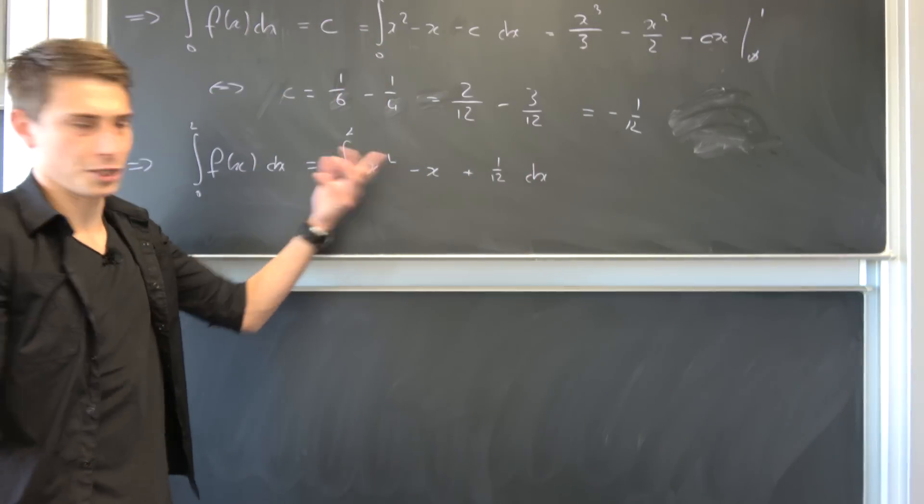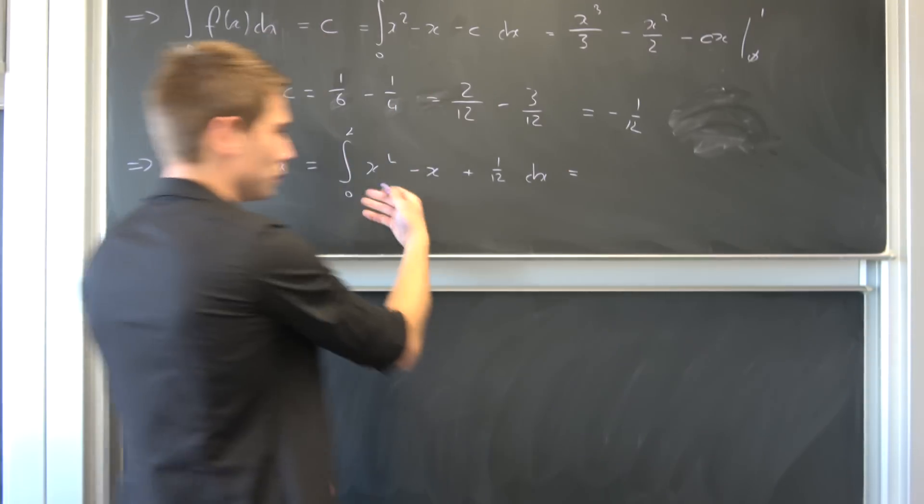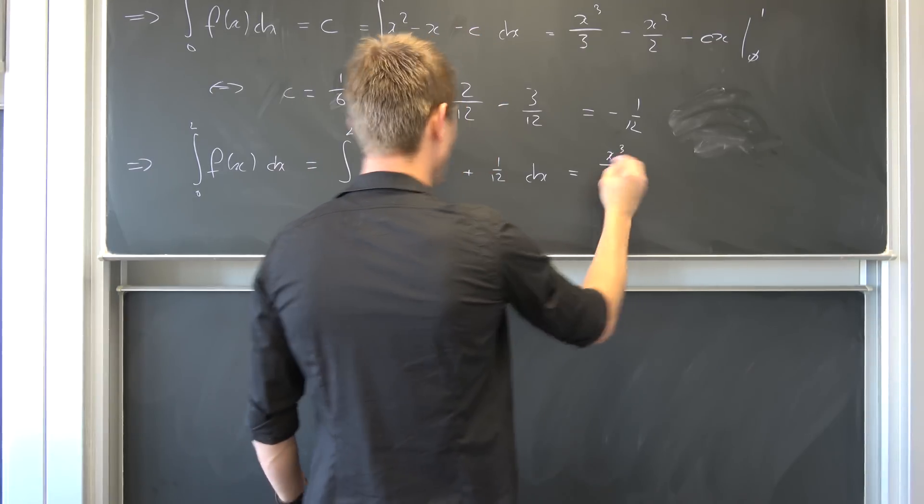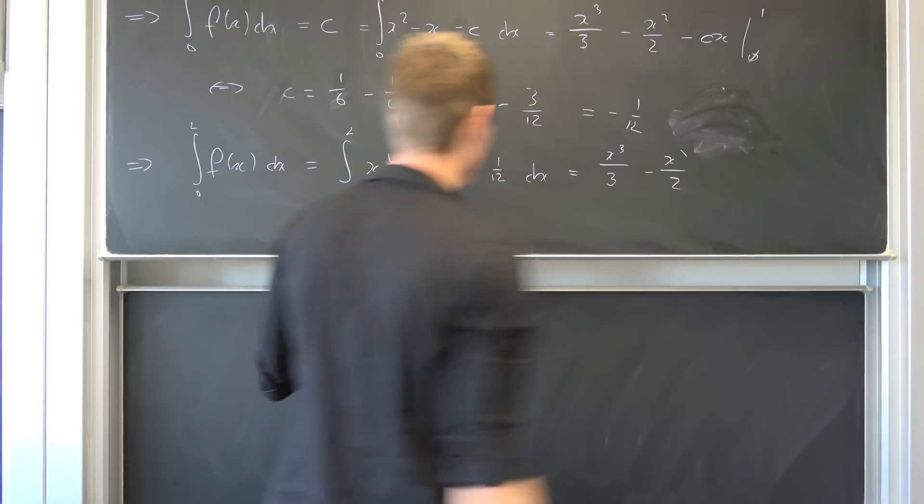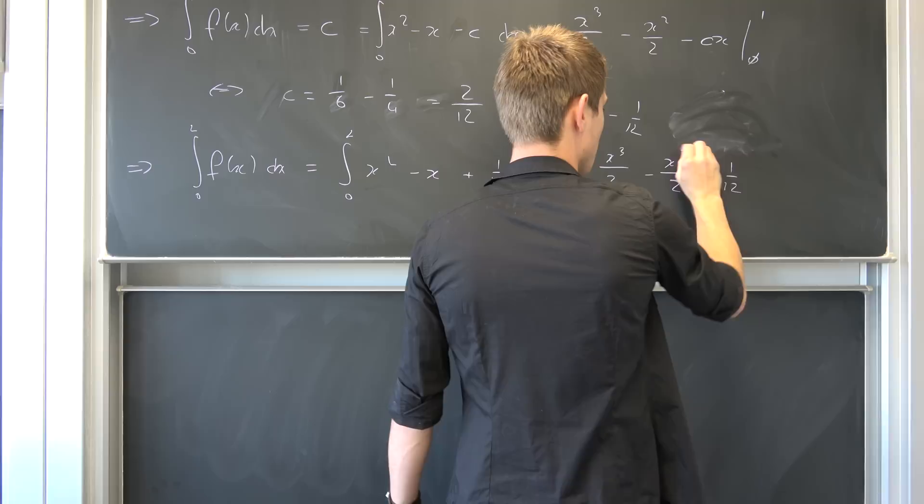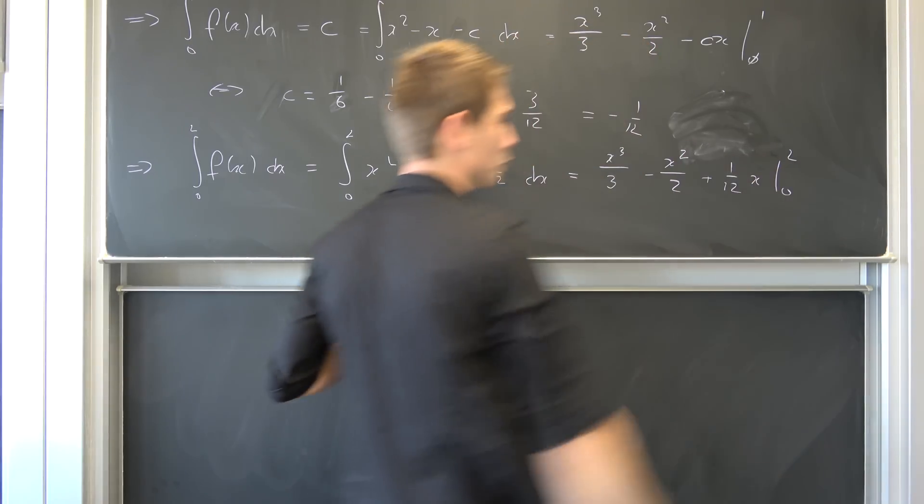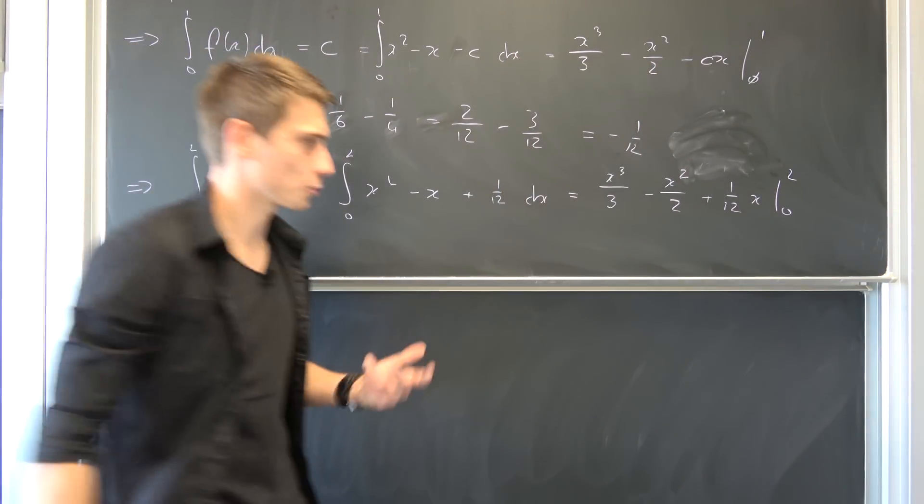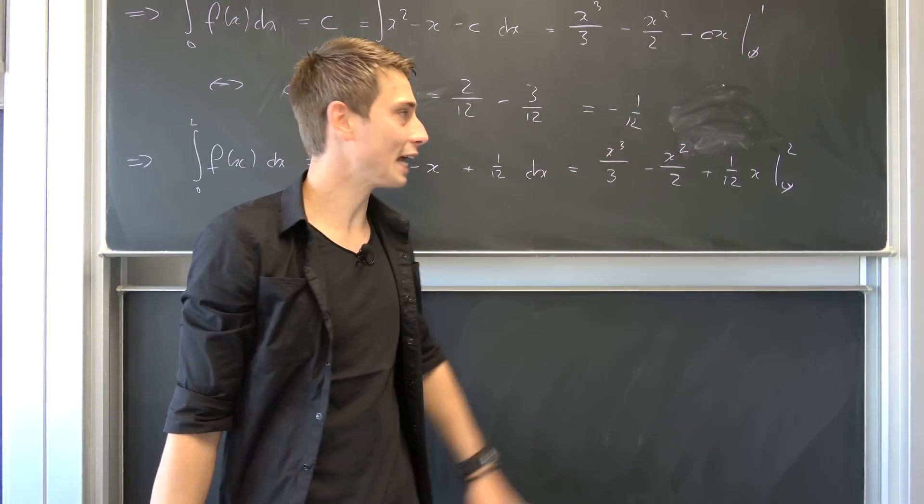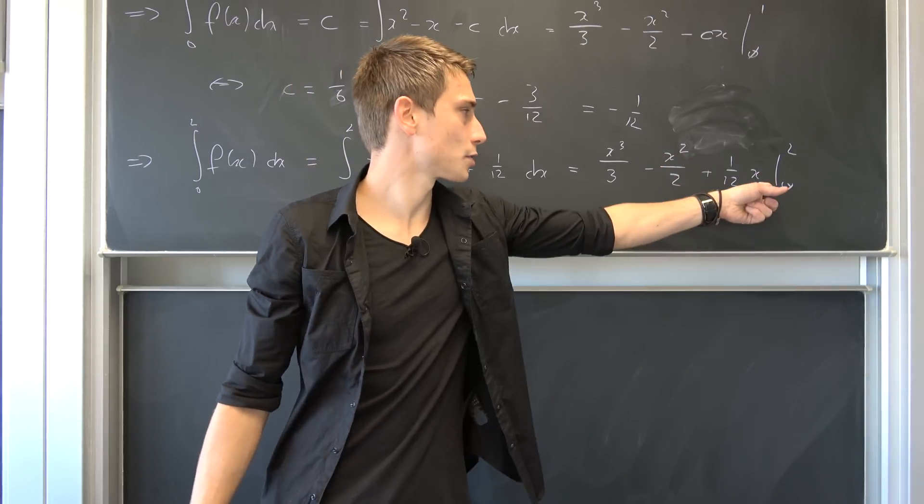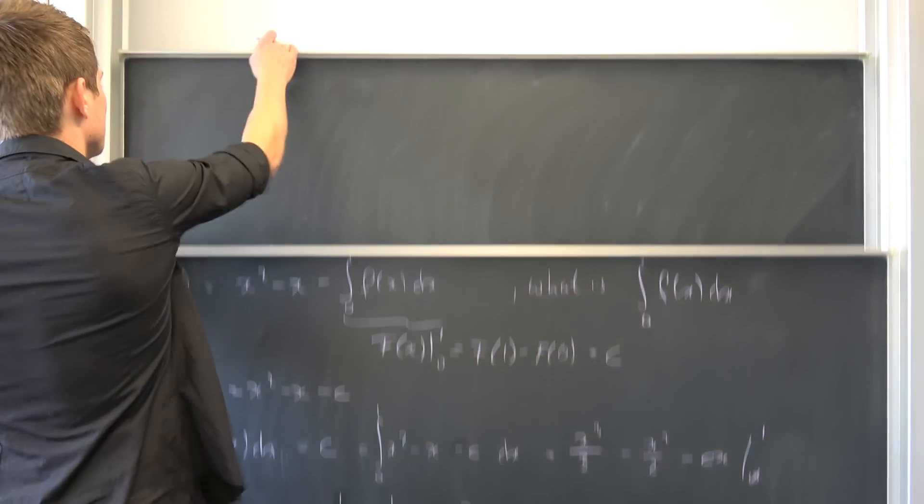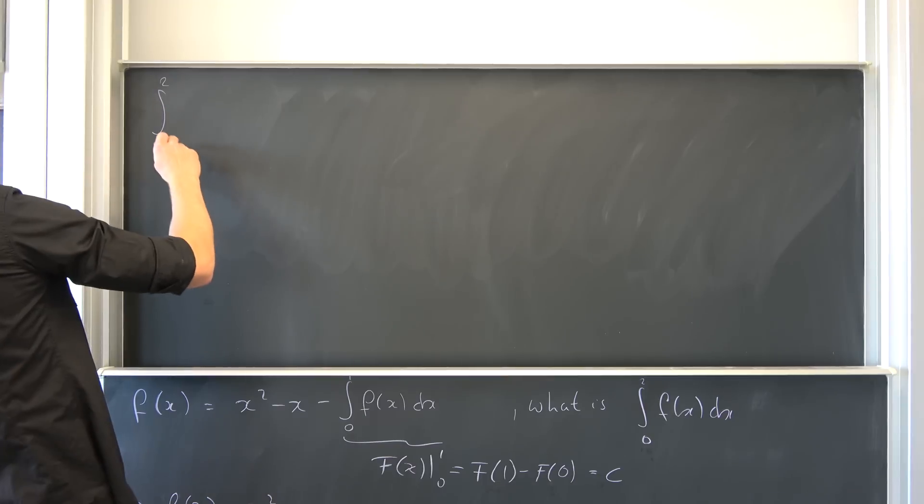Okay, so we know what this is going to evaluate to, at least the anti-derivative is just x to the third power over three minus x squared over two and then plus one twelfth times x from zero to two. Well, the zero term is going to vanish once again completely, and two cubed is just eight, two squared is just two, and this is one sixth.